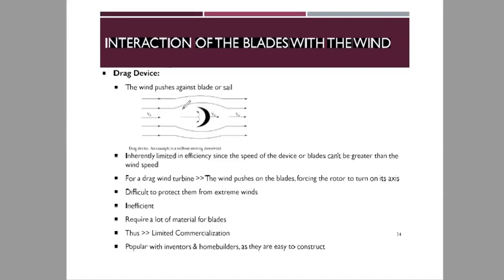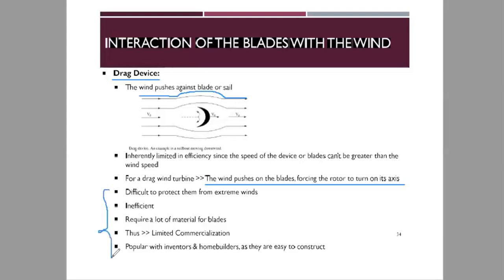As the wind reaches the tip of the blade, the blade begins to turn and the wind goes to the back of the turbine. Some of the wind's energy is captured by the wind turbine, while the uncaptured portion escapes to the back. The drag inherently limits efficiency since the speed of the device or blade cannot be greater than the wind speed, and these devices are difficult to protect from extreme winds and are inefficient.